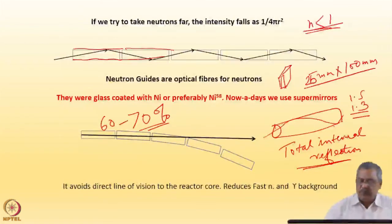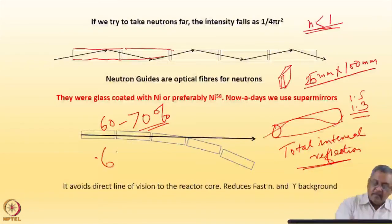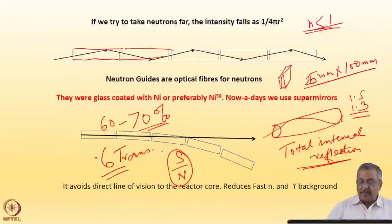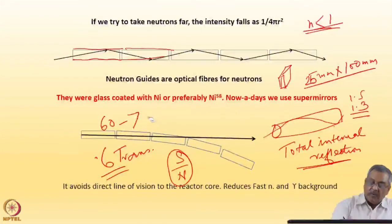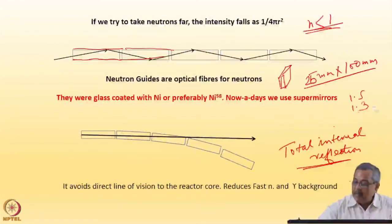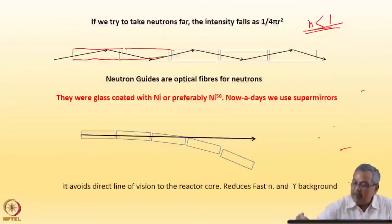You do have some loss in intensity, but because we have gone outside the reactor hall, the background neutron counts fall drastically by a factor of 10 to the power 4 or 5. So a 0.6 transmission with a drop in background of 10 to the power 4 gives an excellent signal-to-noise ratio. You can do much cleaner experiments in the neutron guide hall, and I will describe such experiments in later talks on cold neutrons.